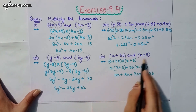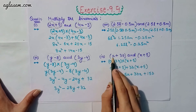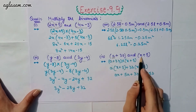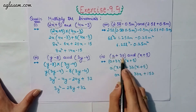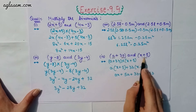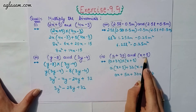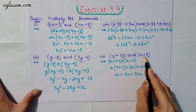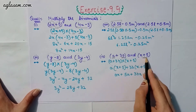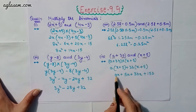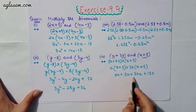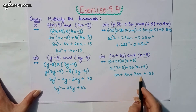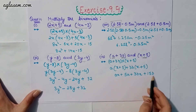Moving to the fourth part: (a + 3ab) and (x + 5). Again, a will be multiplied by (x + 5) and 3ab will be multiplied by (x + 5). After solving this we will get ax + 5a + 3abx + 15ab.